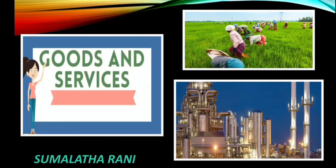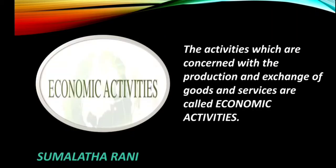Human beings have innumerable wants. To satisfy our wants we need goods and services. Goods are produced by agriculture and industry. We require many services also. These goods and services are to be distributed among us. The activities which are concerned with the production and exchange of goods and services are called economic activities.